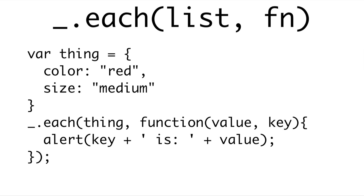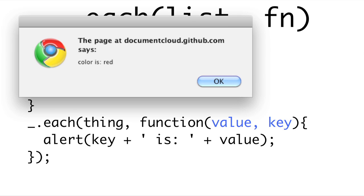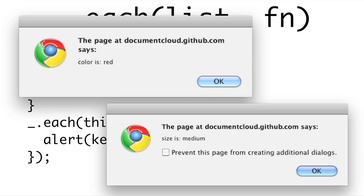What's neat about the each method is it can also work on JavaScript objects. Here we have an object with the key 'color' being 'red' and 'size' being 'medium'. We can pass that object in, and our function will now take two properties — value and key — letting us construct an alert like 'color is red' or 'size is medium'.